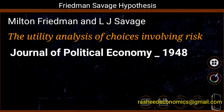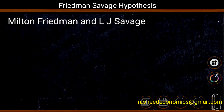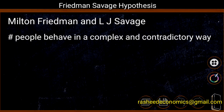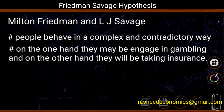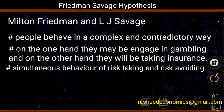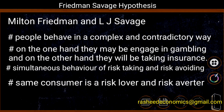According to them, people behave in a complex and contradictory way. On the one hand, they may be engaged in gambling — by engaging in gambling, they are ready to accept risk. On the other hand, they may be buying insurance to avoid risk. That means there is a simultaneous activity of risk taking and risk avoiding. A same consumer himself may be a risk lover in some situations and a risk averter in others.